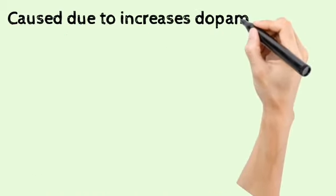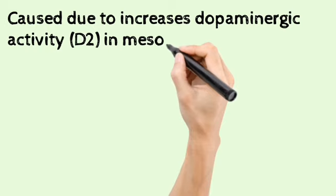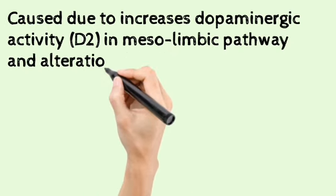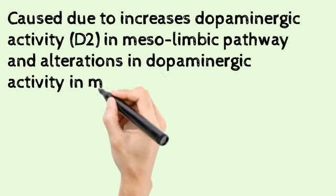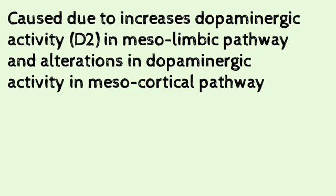Schizophrenia is caused due to increased dopaminergic activity in the mesolimbic pathway and alteration in the activity of dopamine in the mesocortical pathway.